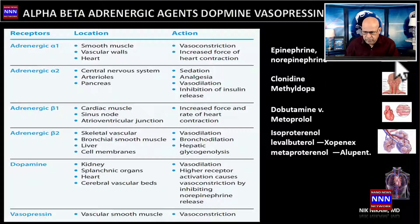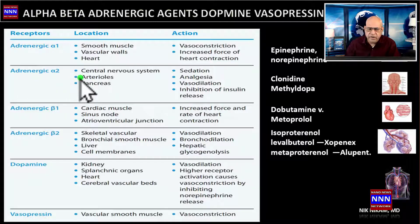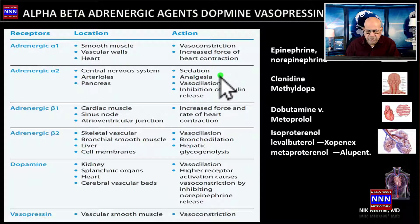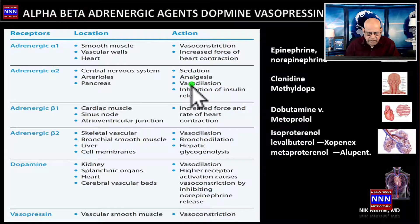Similarly, norepinephrine has a lot more alpha stimulation compared to beta stimulation and acts through the peripheral arterial system. Adrenergic alpha-2 receptors are located in the central nervous system, in the arterioles, and also in the pancreas. They cause sedation, analgesia, and vasodilatation, and in fact they bring down the blood pressure.